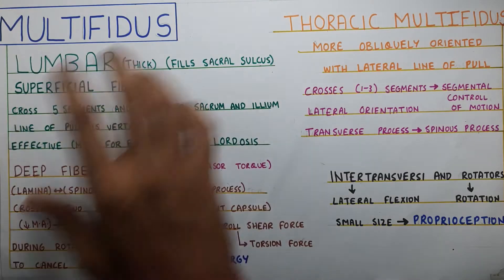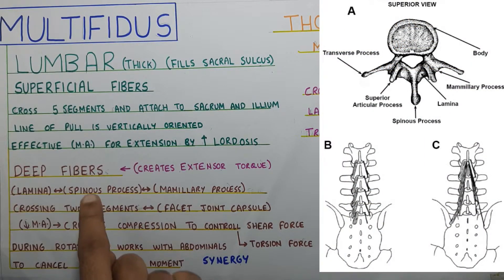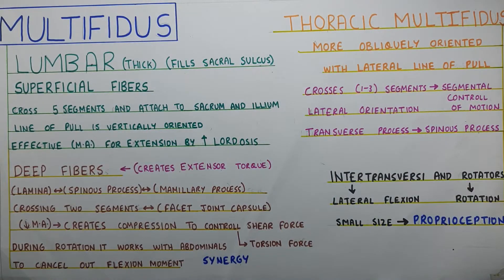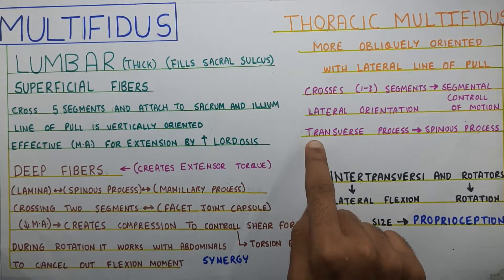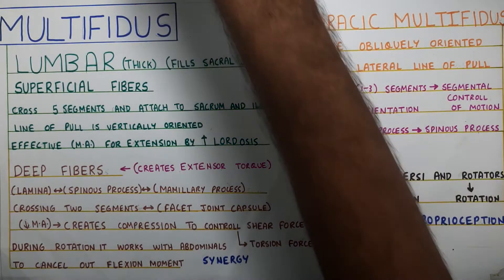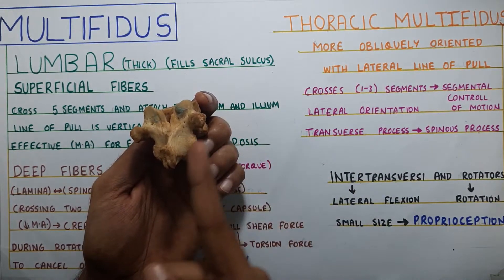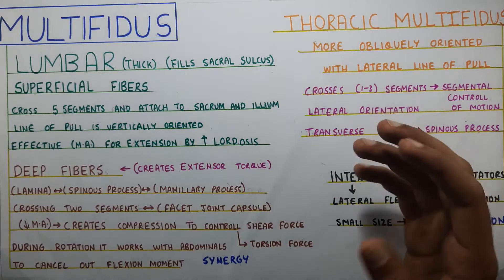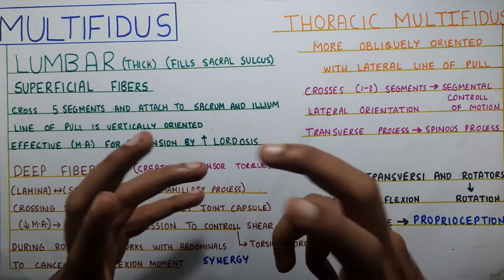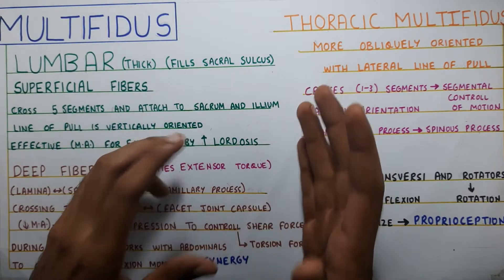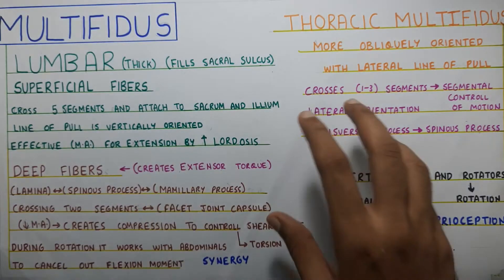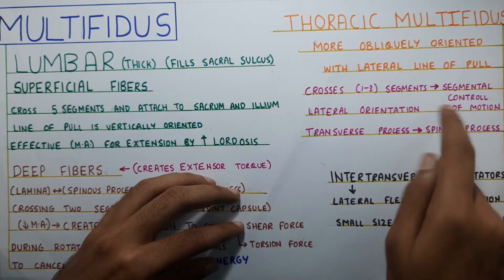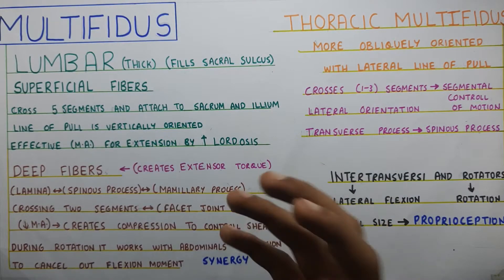Regarding attachments — the multifidus goes from the lamina to the spinous process and then to the mammillary process, which is near the facets. Moving to the thoracic multifidus — it has a more oblique orientation because its attachment goes from the transverse process, which is on the lateral side, to the spinous process. It covers one to three segments, and because it crosses more than two segments, it has more of a segmental control function. That is why when there is spasm, it is because these muscles are trying to control excessive movement in the spine — that is the segmental control, providing protective spasm to protect your spine.